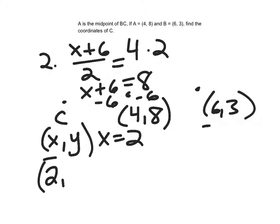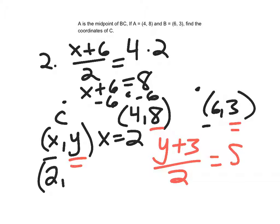So my x-coordinate would be 2. So my y-coordinate, now I need these. So I would have y plus 3 divided by 2, because I'm doing an average still, would have to be my y-coordinate of 8. Multiply both sides by 2.